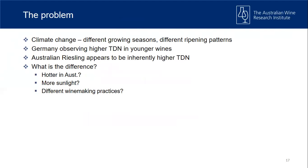The problem we're working on with the Germans is climate change — predictions of warmer growing seasons with more temperature extremes. Our German collaborators are observing higher TDN in younger wines, which is not good. Because Australian Riesling is inherently higher in TDN, we're working together: they want to know what we're doing that gives high TDN wines, and we want to know what they're doing to produce lower TDN wine — a bit of sharing and comparison between the two countries.